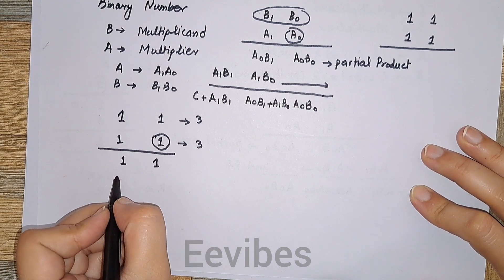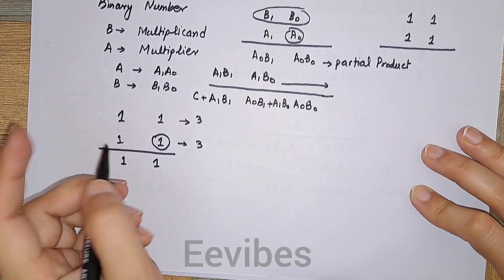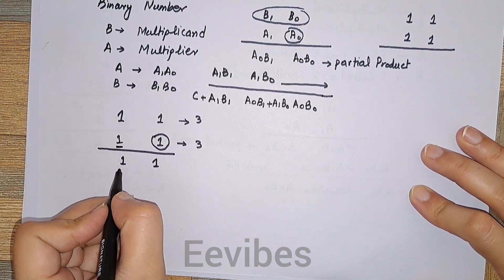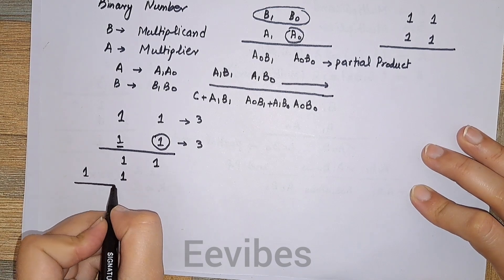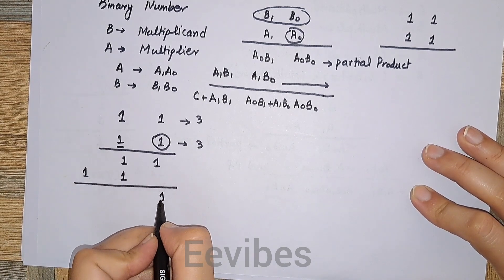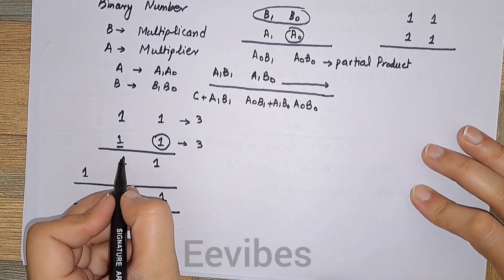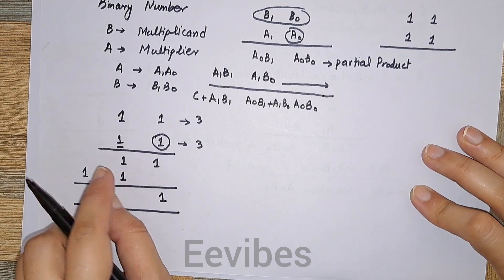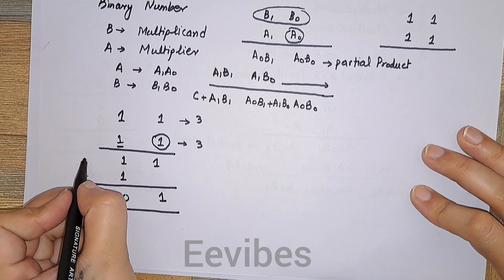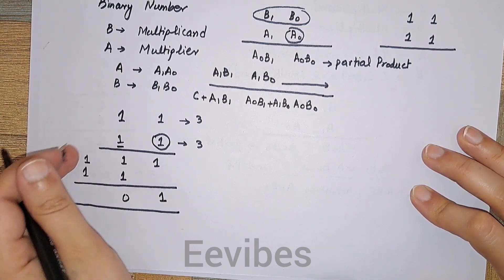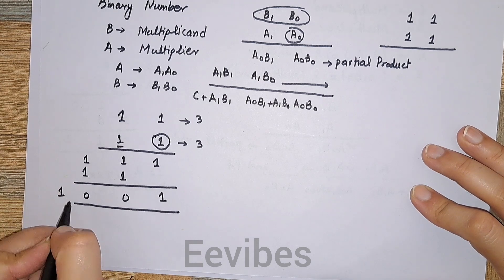After multiplying the first bit, the next partial product is written with a left shift. Since the next bit of the multiplier is also equal to one, we write down the multiplicand again with a left shift. One comes down as it is since no other bit is present to be added. Then we add: one plus one gives sum zero with a carry propagated to the next term, and one plus one again gives zero with a carry out.